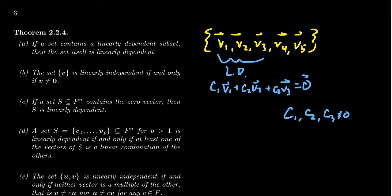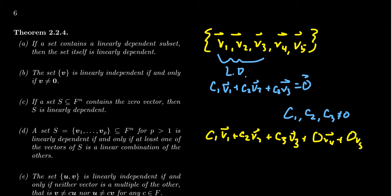What you can do is write: C1·V1 + C2·V2 + C3·V3 + 0·V4 + 0·V5. When you multiply a vector by zero you get the zero vector, and these three vectors already combine to give zero, so the whole sum is the zero vector. We have non-zero coefficients C1, C2, C3—that's a non-trivial dependence relationship. We don't demand all coefficients be non-zero; we only need at least one to be non-zero. If any subset has a dependence relationship, you can extend it to the larger set by putting zeros on anyone not involved.